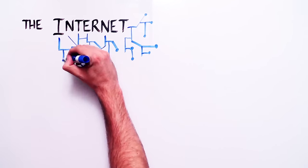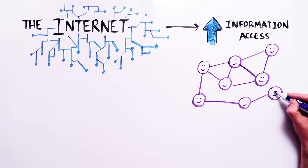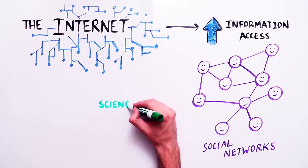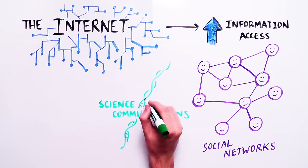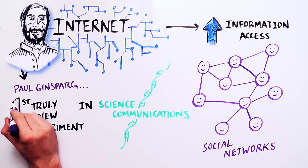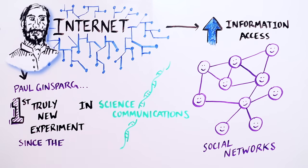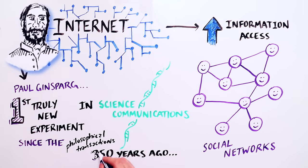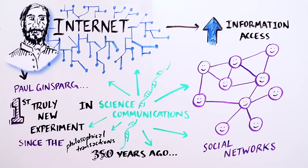The internet is continuing to redefine how people access information and create social networks. Using the internet, physicist Paul Ginsparg tried the first truly new experiment in scientific communication since the creation of the philosophical transactions 350 years ago.